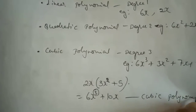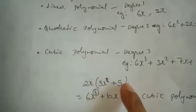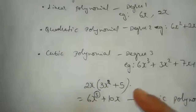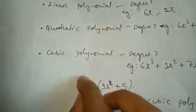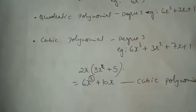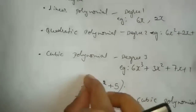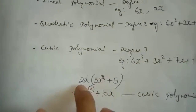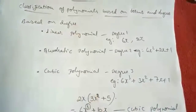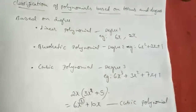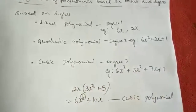When they ask you to classify a polynomial as linear, quadratic, or cubic, you have to check whether the polynomial can be simplified or expanded first. They may have written it in a condensed form — you expand it to its simplest form and then observe the degree. When you expand it, you find it is cubic, so it is a cubic polynomial.